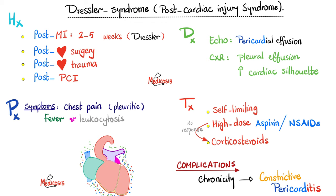Symptoms of Dressler syndrome include pleuritic chest pain and fever with leukocytosis, because it is pericarditis. Diagnosed with echo to see pericardial effusions; chest X-ray might show pleural effusions and an enlarged cardiac silhouette due to inflammation in the pericardium. Treatment: Dressler syndrome is largely self-limiting. We give high-dose aspirin, which blocks cyclooxygenase, decreasing prostaglandins and inflammation. If the patient is not responding to non-steroidals, you can try corticosteroids. Complication: it can become chronic, and chronicity can lead to constrictive pericarditis.